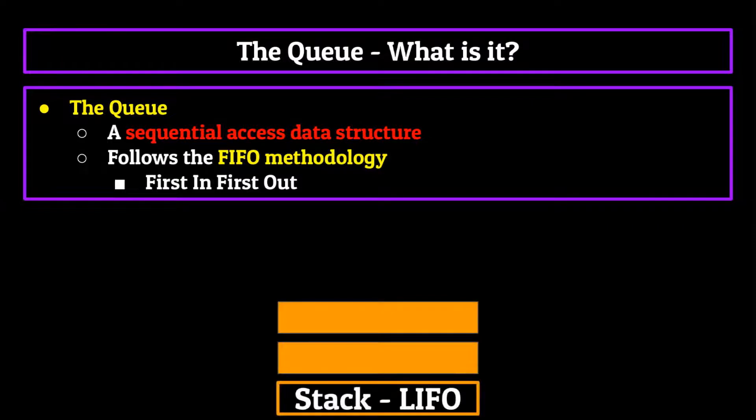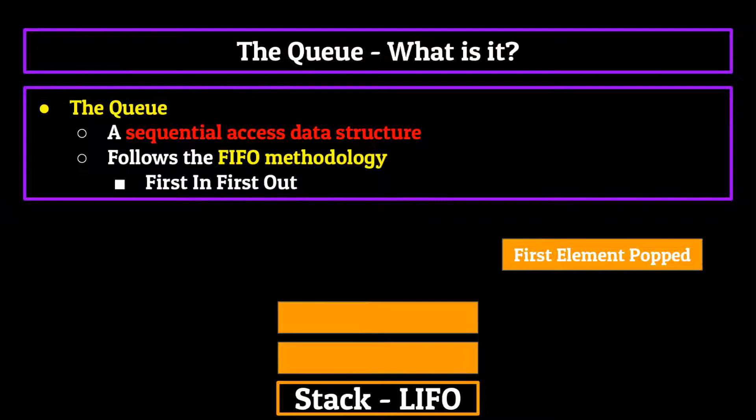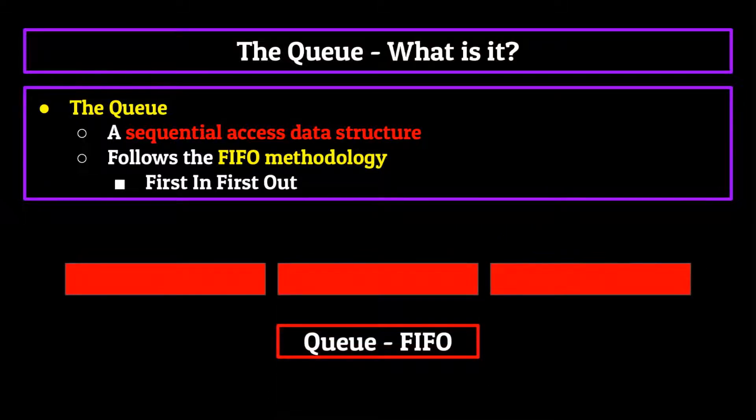Now if you remember back to stacks, this certain way was the LIFO methodology, or last in first out, where the last element pushed onto the stack would be the first one we popped off, similar to a stack of books that we add to and remove from. In contrast, the queue follows what's known as the FIFO methodology, or first in first out, where the first element added to the queue will always be the first one to be removed.